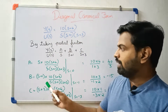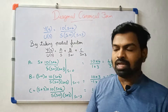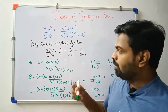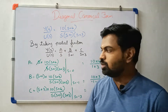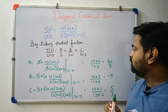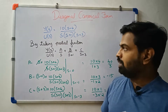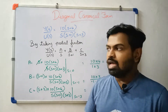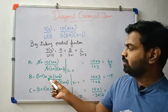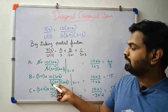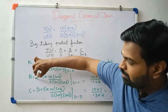S is equal to 0. To find A: 10 x 4 x 1 x 3 gives 40 by 3. B is found by multiplying (s plus 1) into 10(s+4) by s(s+1)(s+3), then cancelling (s plus 1) into (s plus 3).